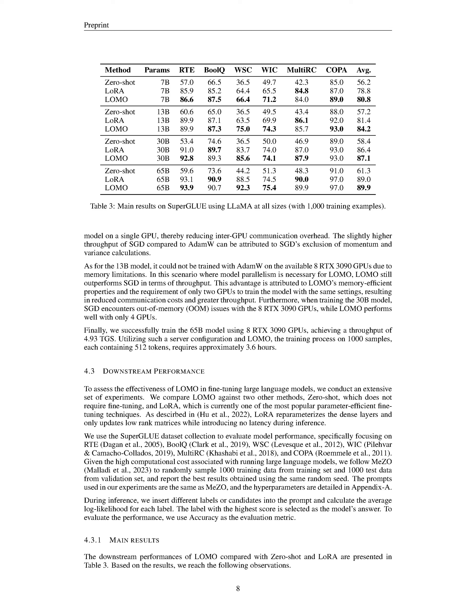Moreover, when we tried to train the 30 billion parameter model, SGD ran into out-of-memory issues on the 8 RTX 3090 GPUs, whereas LOMO performed well with only four GPUs. Finally, we successfully trained a 65 billion parameter model using 8 RTX 3090 GPUs, achieving a throughput of 4.93 TGS. With a server setup like this and LOMO, training on 1,000 samples, each containing 512 tokens, takes roughly 3.6 hours.